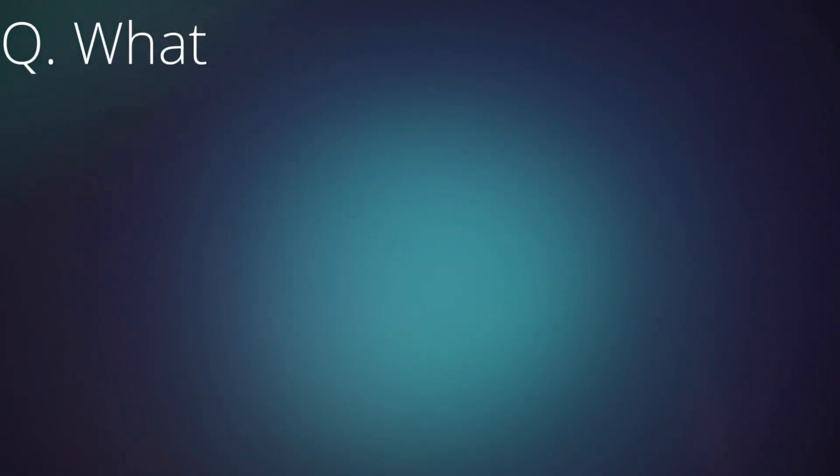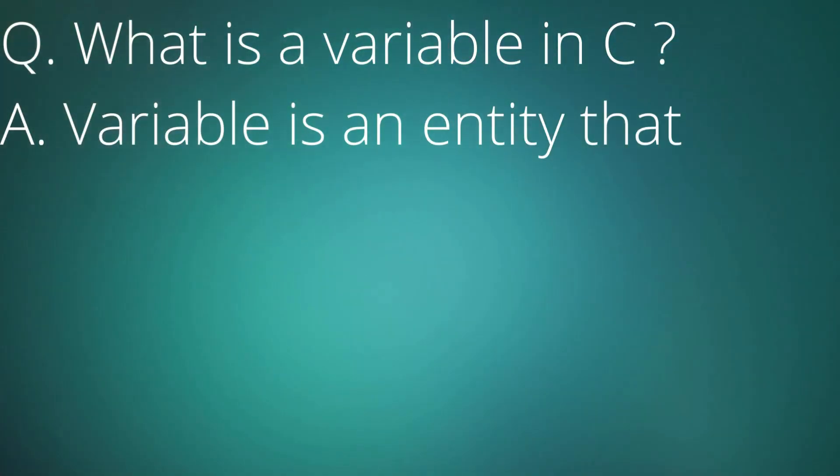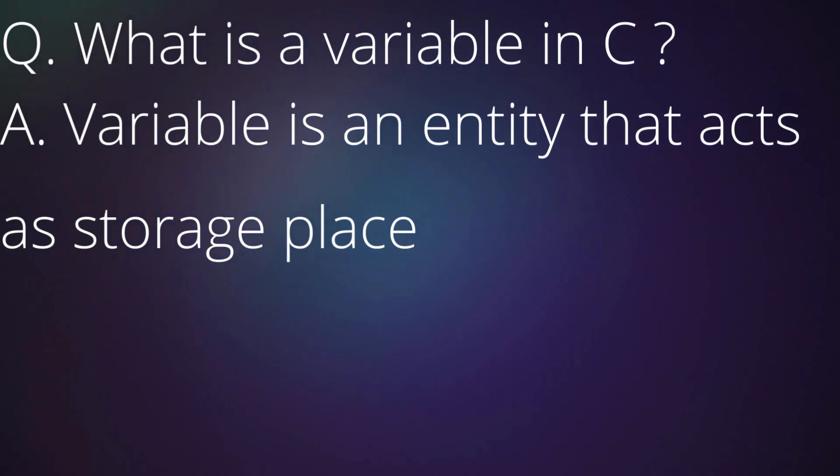Question: What is a variable in C? Answer: Variable is an entity that acts as storage place for a value.